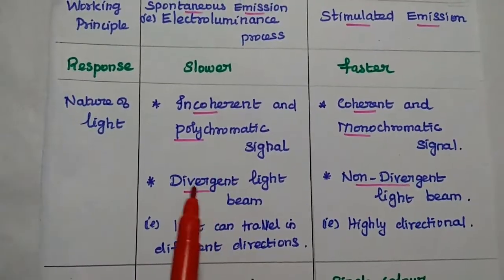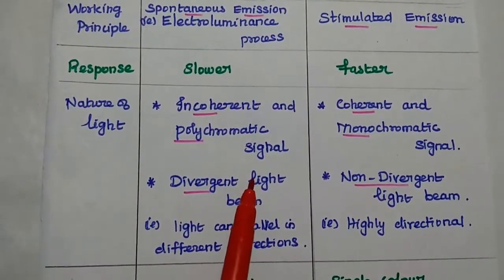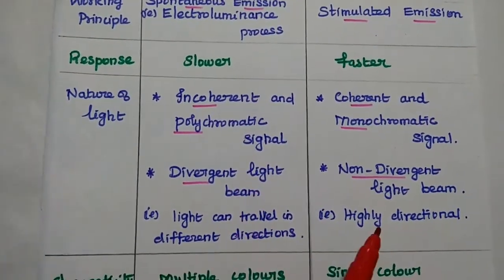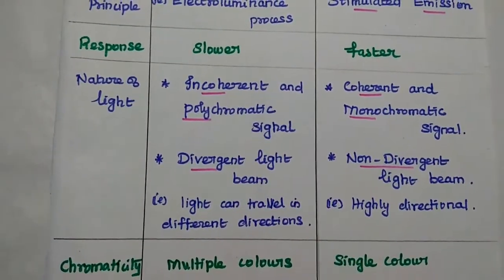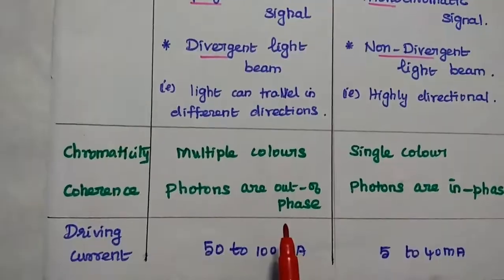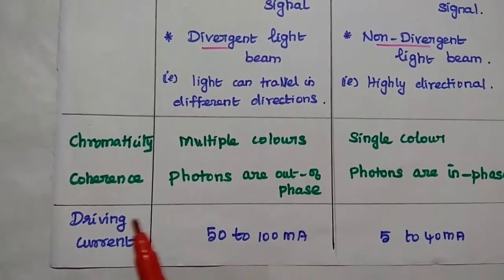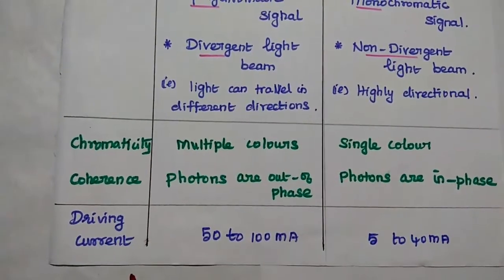The light beam is divergent in LED, the light signal is radiating in all directions randomly. But for laser, it is highly directional. Chromaticity means multiple colors in LED; in laser it is single color. Coherence means photons are out of phase in LED; in laser they are in phase.